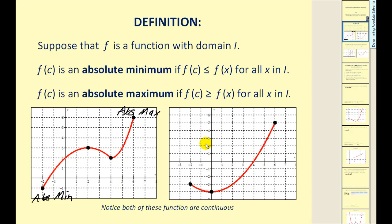Looking at this graph, this is the obvious high point again, therefore this y value would be the absolute max. The y value of this low point represents the absolute minimum. What we should see here is that the absolute extrema can occur on the end points as well as at the critical numbers. We should be aware that some textbooks refer to maximums and minimums when they are talking about absolute max and mins, so we need to make sure that when we are talking about relative extrema versus absolute extrema, we distinguish between the two.